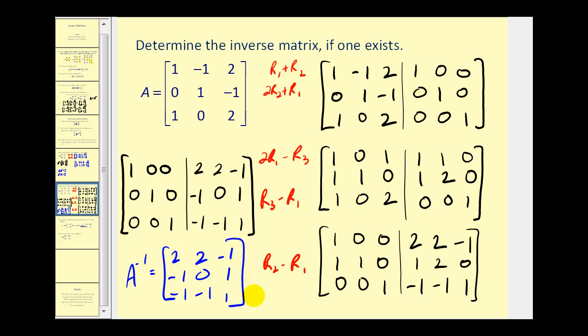We're a little short on time, but you may want to go ahead and test to make sure that A times A inverse and A inverse times A both equal the identity matrix. I've already done that, and it does check out.